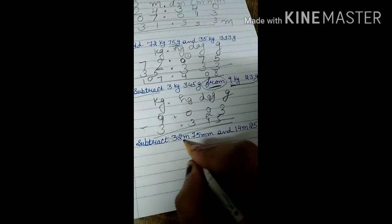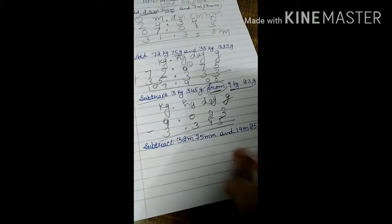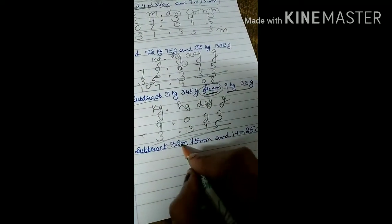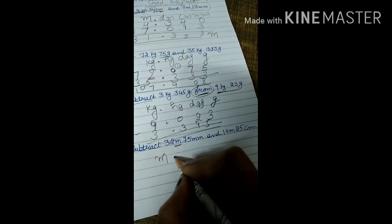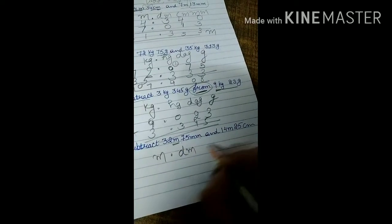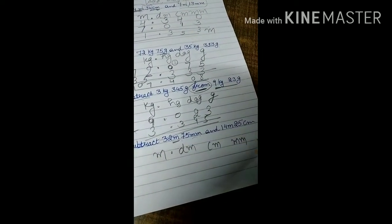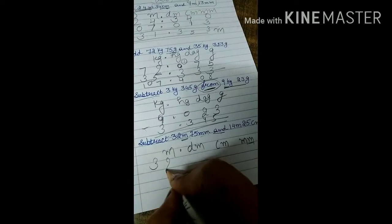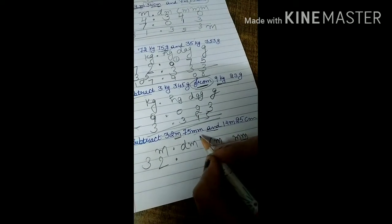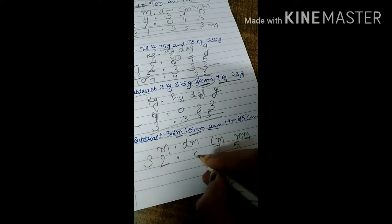Same method for: 32 meters 75 millimeters minus 14 meters 25 centimeters. The biggest unit is meter, so write meter first, put the decimal point, then decimeter, centimeter, millimeter. Smallest unit is millimeter. Write 32 meters, then decimeter is nothing, then 75 millimeters at the millimeter place.